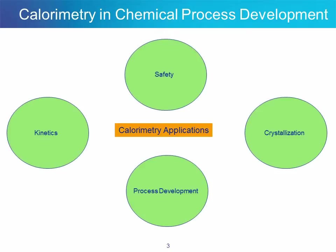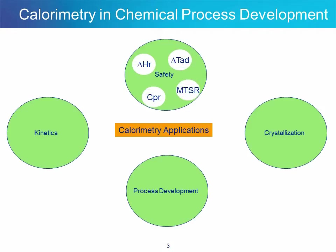There are mostly four areas today where calorimetry is applied in chemical reaction development. One is process safety, where people look at process parameters like heat of reaction, heat capacity, delta-T adiabatic, and process maximum temperature.